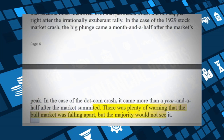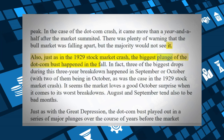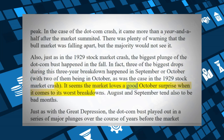There was plenty of warning that the bull market was falling apart, but the majority would not see it. Also, just as in the 1929 stock market crash, the biggest plunge of the dot-com bust happened in the fall. Three of the biggest drops during this three-year breakdown happened in September or October, with two of them being in October — as was the case in the 1929 crash. It seems the market loves a good October surprise when it comes to its worst breakdowns.